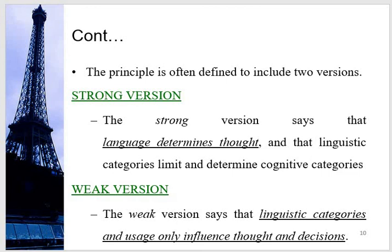The weak version says that linguistic categories and usage only influence thought and decisions. Basically, this is the same controversy as the chicken-and-egg problem: some say language determines thoughts, and others say thoughts determine language.